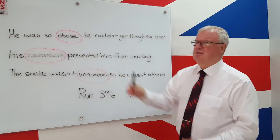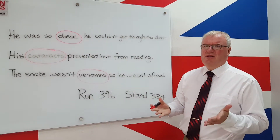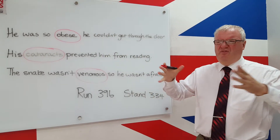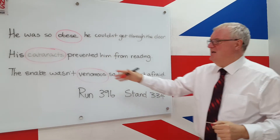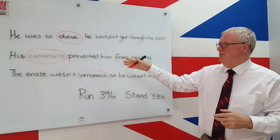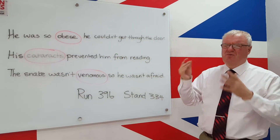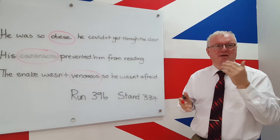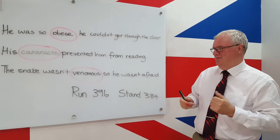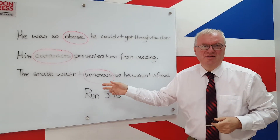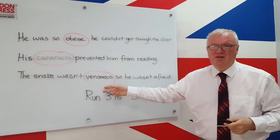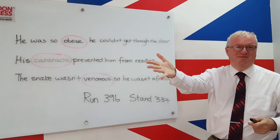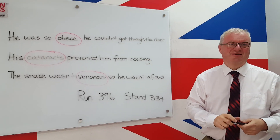For example: 'He was so obese.' What does it mean? He couldn't get through the door — it must mean fat. 'His cataracts prevented him from reading.' What stops people from reading? It must be an eye condition. 'The snake wasn't venomous' — he wasn't afraid — poisonous. Try to use the context, try to use the text.